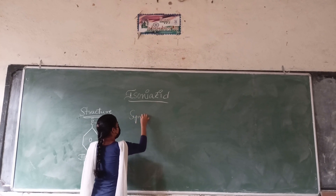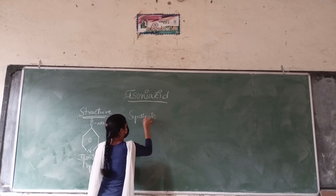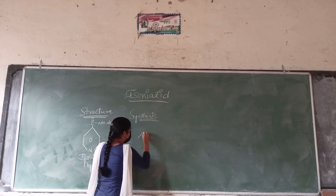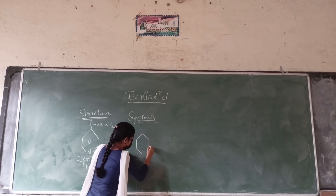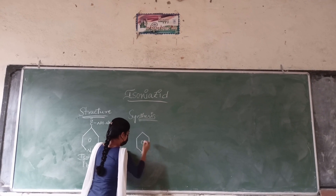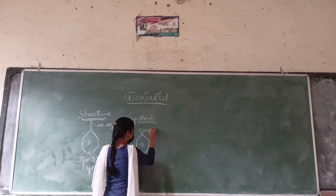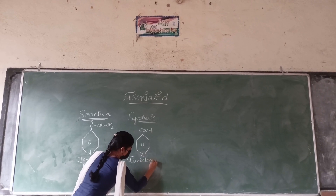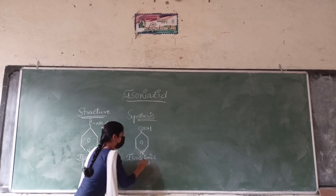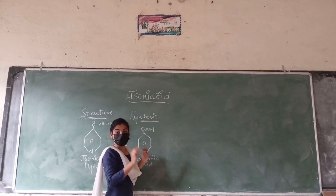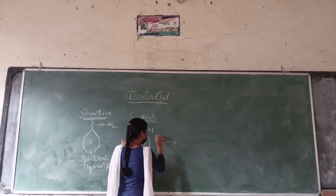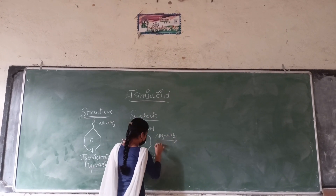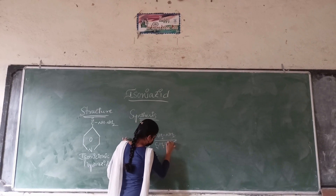Now let us see the synthesis. The preparation method of isoniazid drug is very easy — it will complete in one step only. First, we have to take isonicotinic acid. On the pyridine ring, if COOH is present, it is known as isonicotinic acid. This isonicotinic acid is treated with hydrazine in presence of ethyl alcohol.